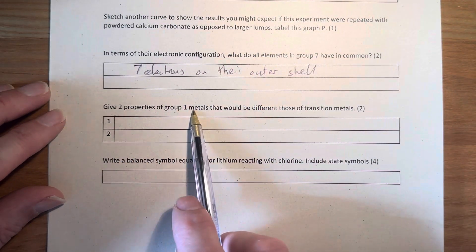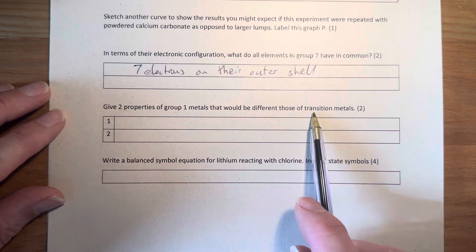Two properties of Group 1 metals - they're the Alkali metals - that will be different from those of Transition metals.